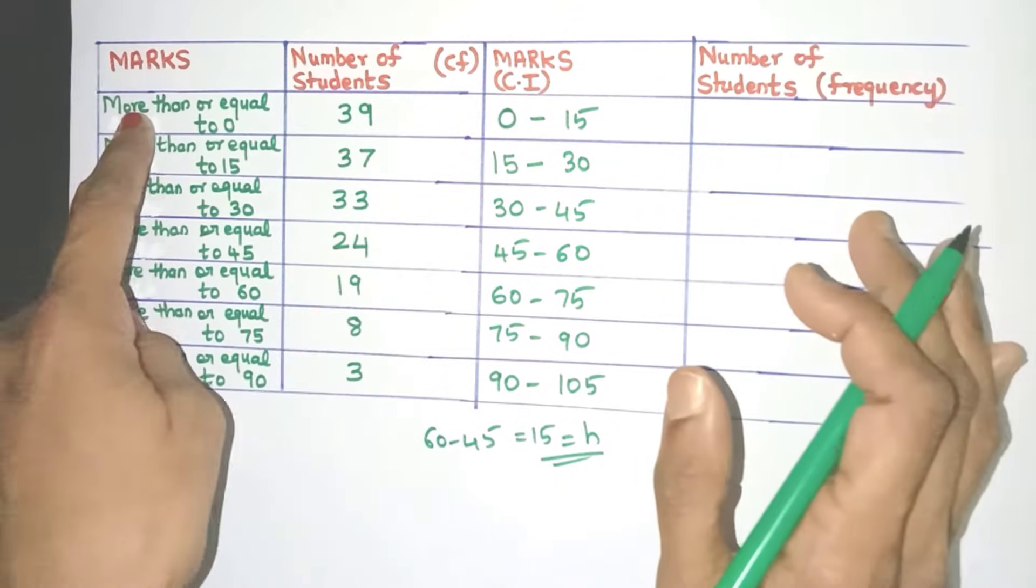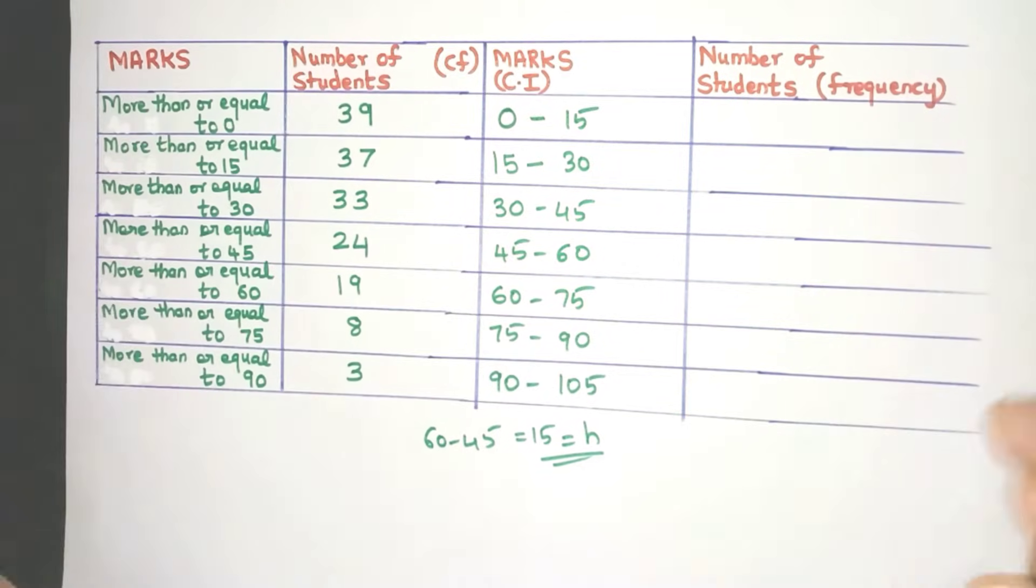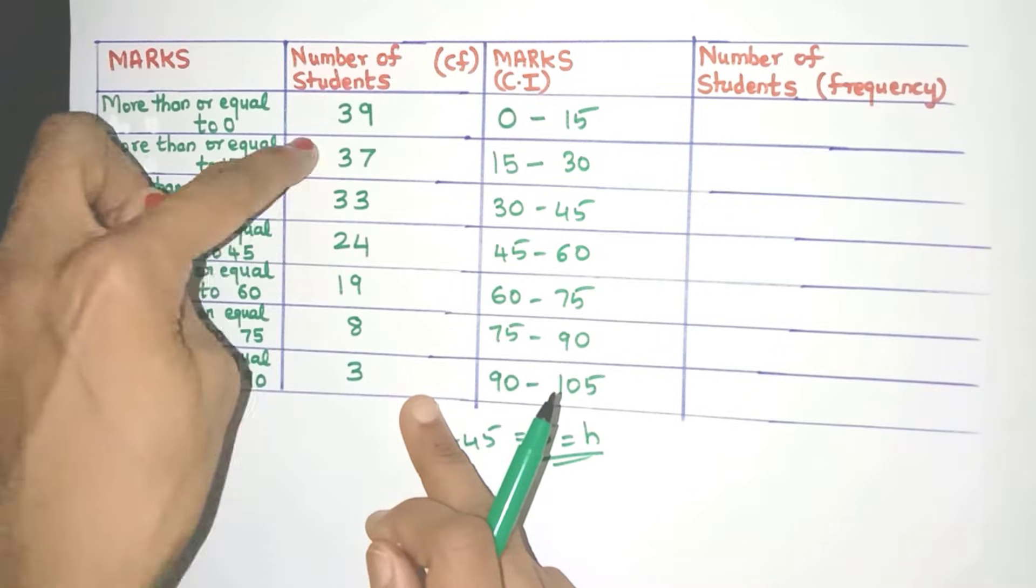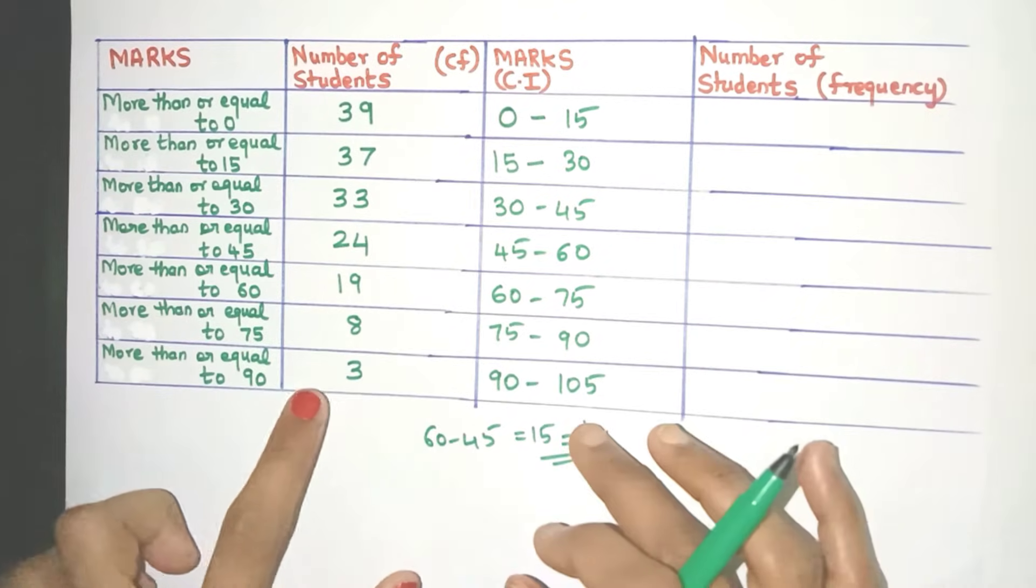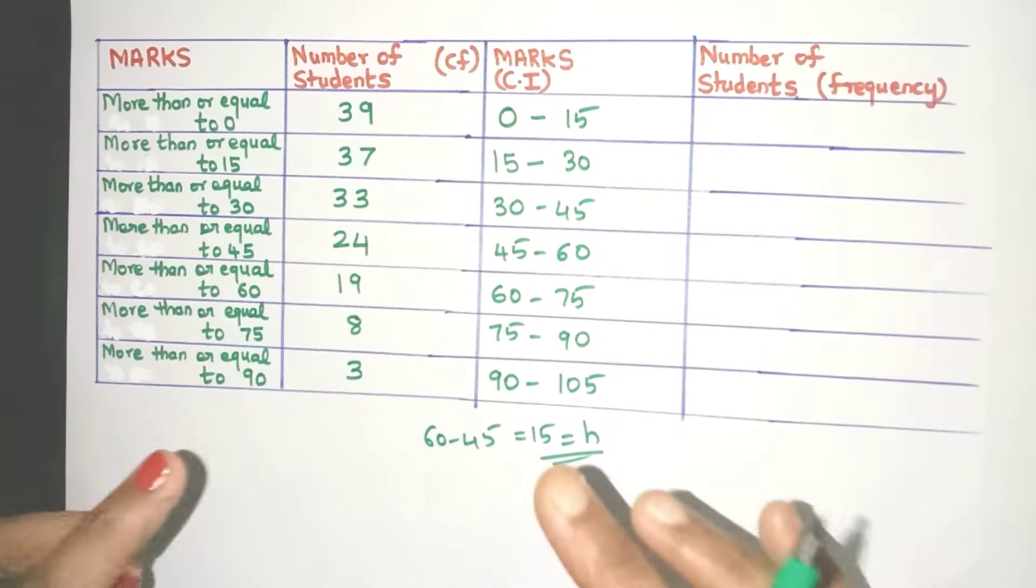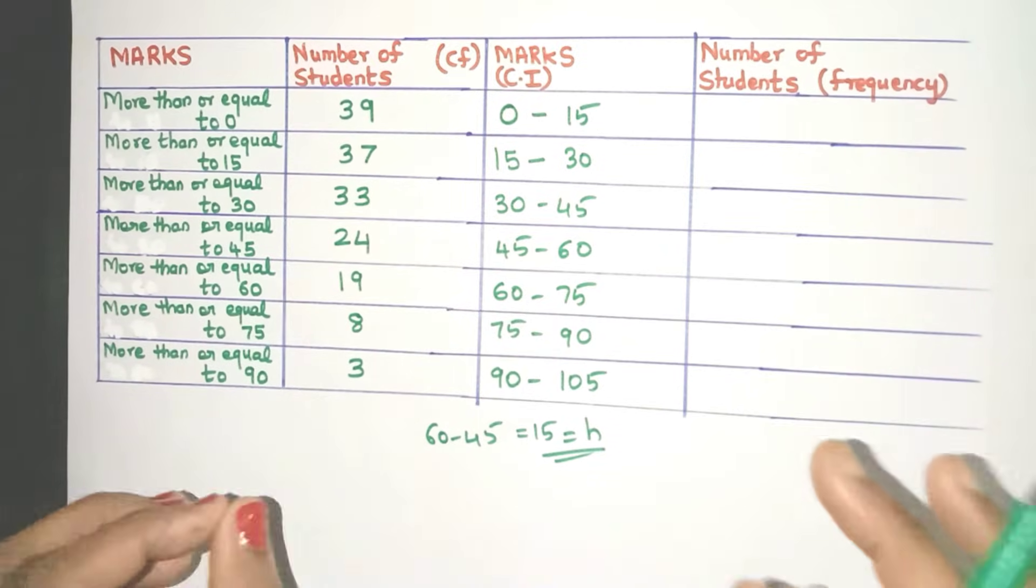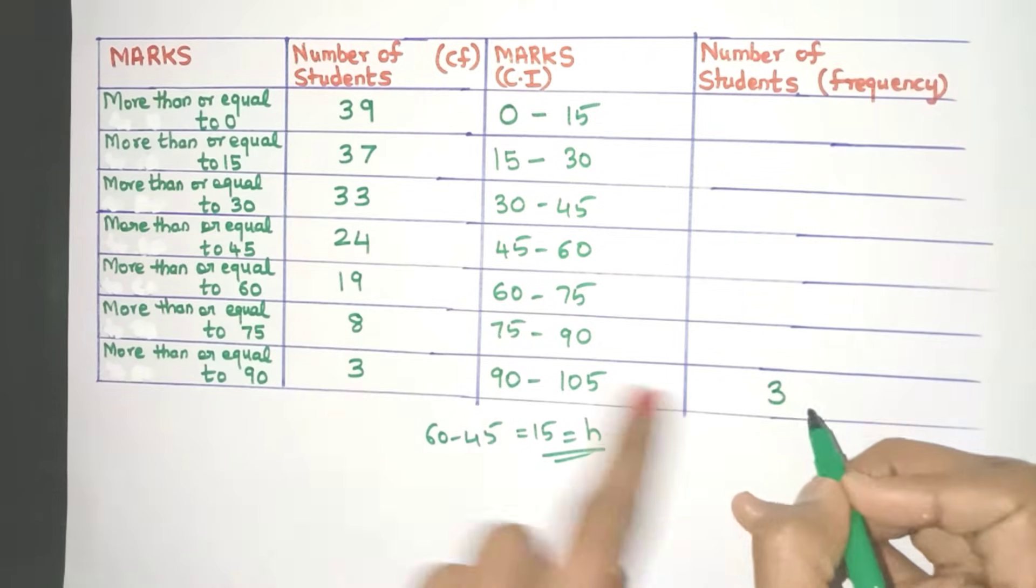Now let's also find the frequencies. Now here there is no point starting from the first row because all the students are included in the first row itself. So let's start from the bottom row and work our way upwards. So more than or equal to 90 marks three students have got. Now does this CF value include frequency from any other row? Definitely not. So we can automatically say that this CF value becomes the frequency value also.